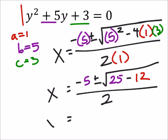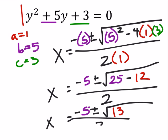So x equals negative 5 plus or minus the square root of 13. That's 25 minus 12, and still over 2.